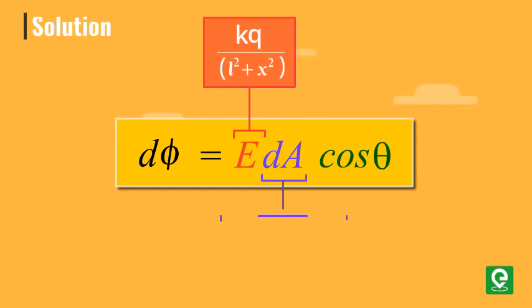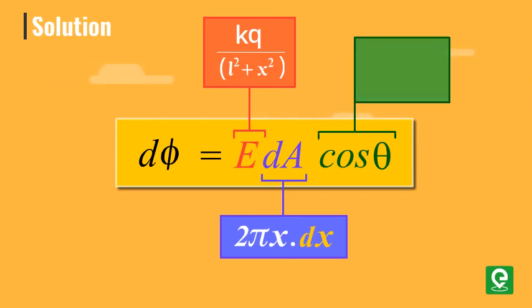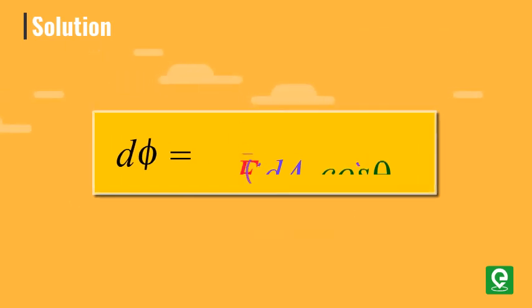And area dA equal to 2 pi x into dx, and value of cos theta can be substituted from this triangle as base divided by hypotenuse, that is l by square root of l square plus x square.